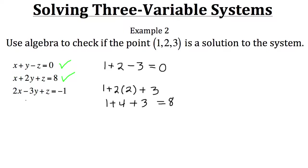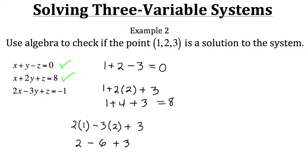Now let's plug the values into the last equation: two times x minus three times y plus z, where x is one, y is two, and z is three. Two times one is two, minus three times two is subtracting six, plus three. Two minus six is negative four, and negative four plus three is negative one. That matches the third equation. Since all three equations check out, the solution is confirmed: x equals one, y equals two, z equals three.